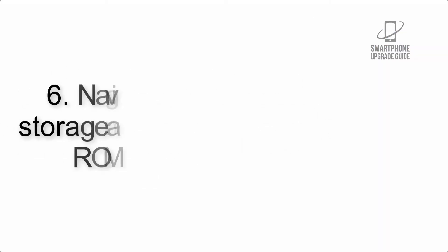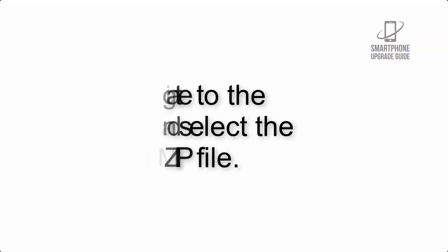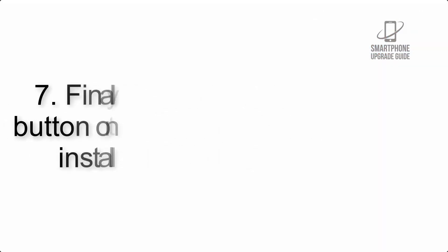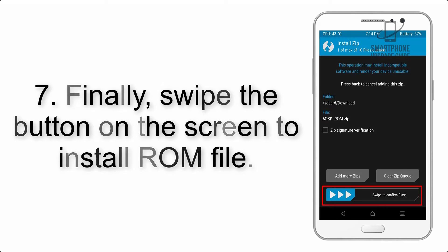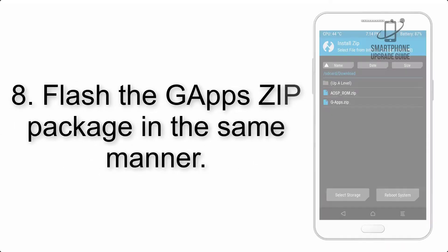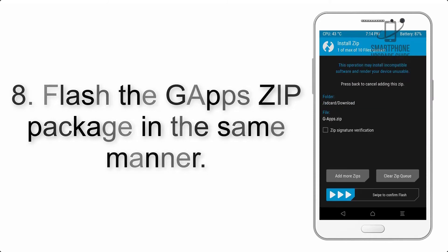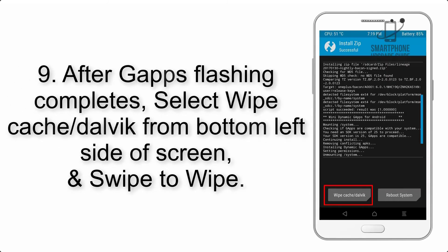Step 5: Go back to the recovery main screen and tap on the Install button. Step 6: Navigate to the storage and select the ROM zip file. Step 7: Finally, swipe the button on the screen to install the ROM file.